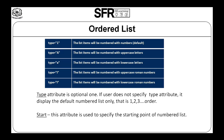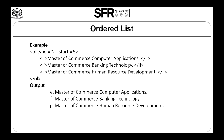Now let us see the Start Attribute. This attribute is used to specify the starting point of the numbered list. Here is the example for Ordered List. In this program, the user uses Type and Start Attribute. In Type Attribute, the user uses small letter alphabet a. In Start Attribute, the user uses the value 5. The list of items is displayed within LI tags: Master of Commerce Computer Application, Master of Commerce Banking Technology, and Master of Commerce Human Resource Development. The output is shown below, starting from small alphabet e.